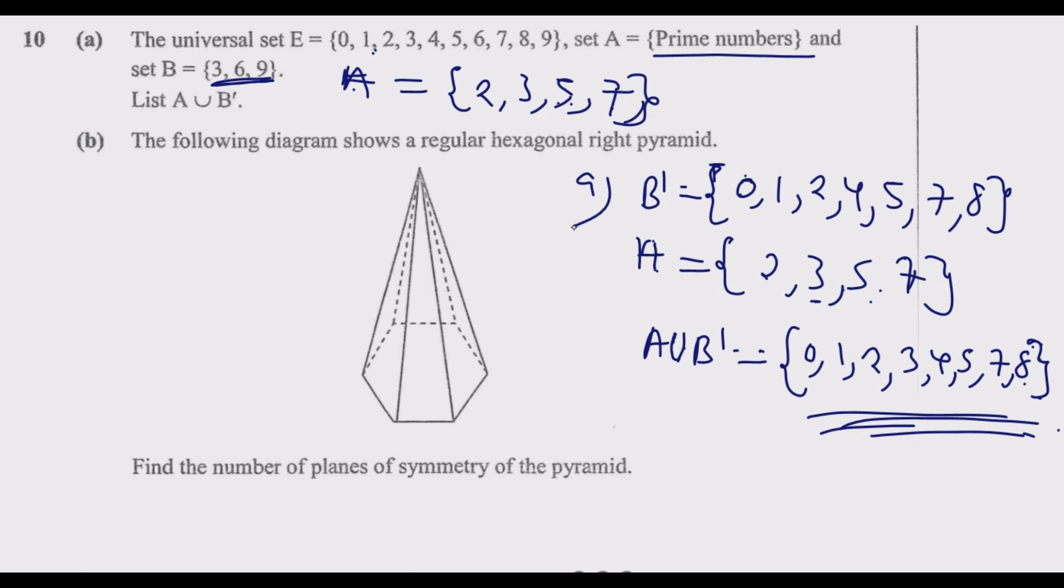Once you do that you are good to go. Take note, we are going to have {0, 1, 2, 3, 4, 5, 7, 8}. 3 is the only element in B that will appear because 3 is appearing in the prime numbers, which is in set A.